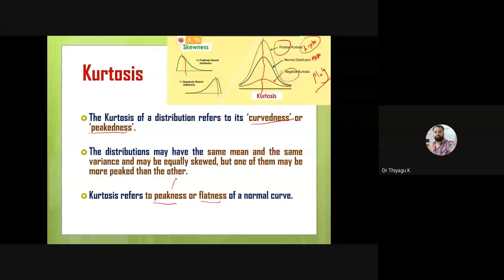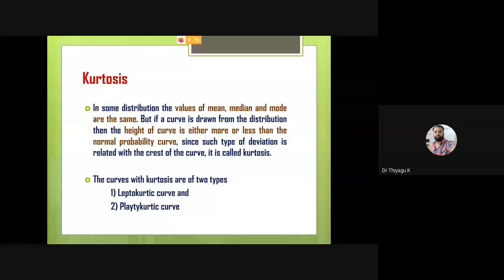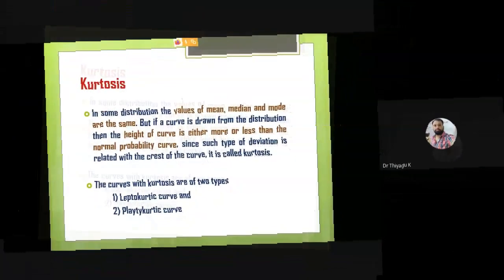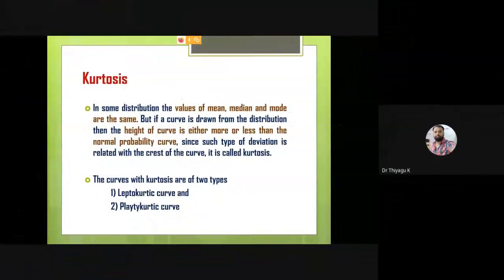Peakness means lepto, flatness means platy. In some distributions the mean, median, and mode are the same — only from the kurtosis. But in the current distribution the height of the curve is either more or less than normal. Since such types of deviations rate to the curves with kurtosis — there are two types only, normally we are telling two curves, removing the mesokurtic. But in some textbooks they may go to three types: lepto, meso, and platy.